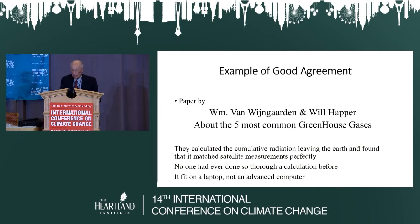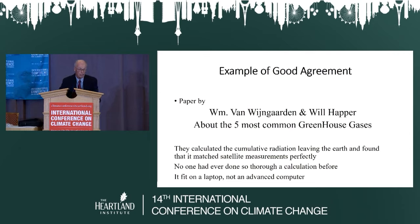The example is a paper put out by William Van Wijngaarden from Canada and Will Happer, our own Will Happer, who's part of our team here today and has been for many years. It's about the effects of all the different greenhouse gases, which include: one, water; two, CO2; and then three, several trace gases such as methane and nitrous oxide. Not to be overlooked is ozone, which counts because it's important up in the stratosphere.